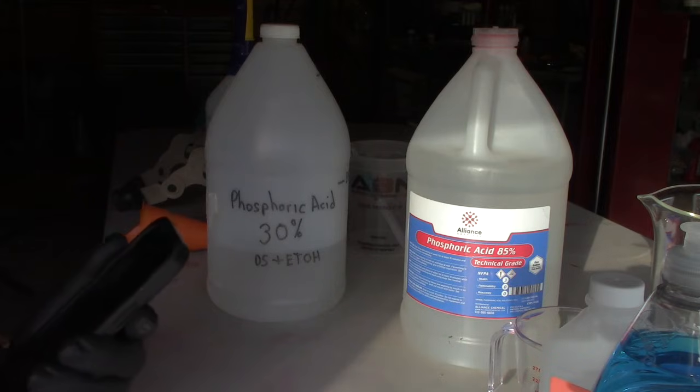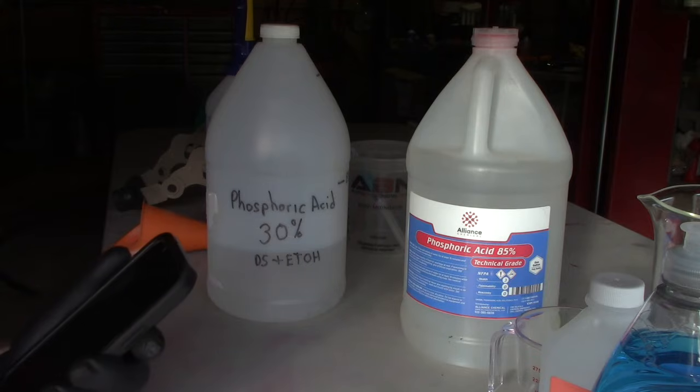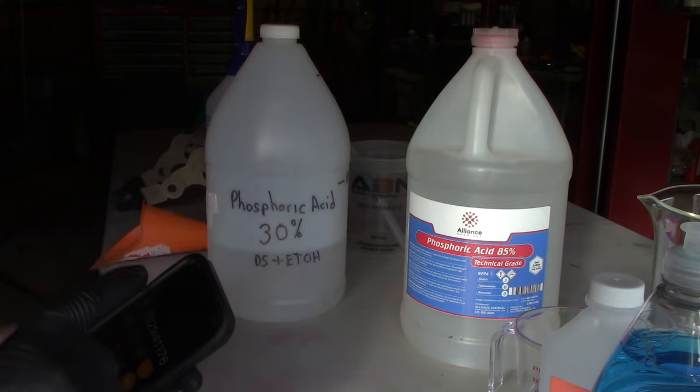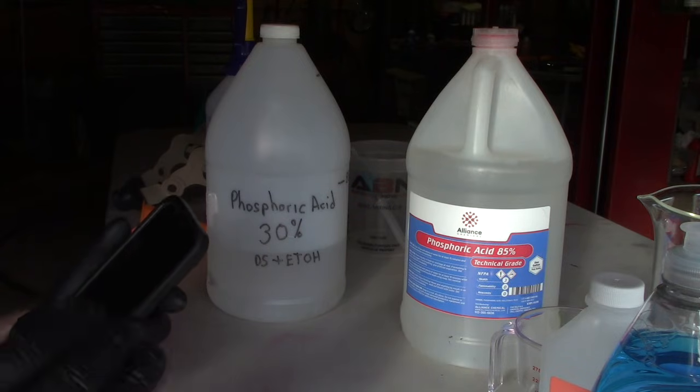What you do is you take the 30 percent and you divide it by the percentage of the acid that you have, okay? And then you multiply that by the volume, the amount of solution you want to end up with.